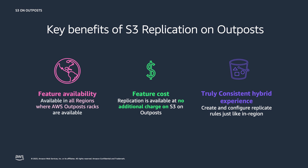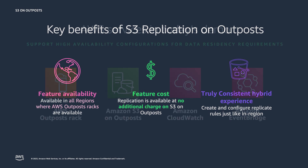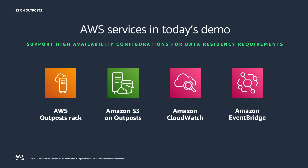Support for S3 replications on Outposts is available at no additional cost and is available in all AWS regions where AWS Outposts racks are available. Note that there's no egress charge for data sent between AWS Outposts racks since that traffic is occurring across the customer's network, called the Local Gateway, LGW. The services we'll use today include AWS Outposts Rack, S3 on Outposts, Amazon CloudWatch, and Amazon EventBridge.